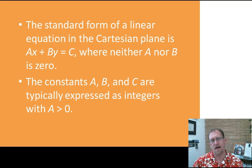So we are again reviewing Algebra 1 and letting it apply now to geometry. The standard form of a linear equation in the Cartesian plane is Ax + By = C, where neither A nor B is zero. If you have A or B as 0, then it throws things off. The constants A, B, and C are typically expressed as integers with A being greater than 0, so a positive integer. This is a system that we've learned before and we're going to be applying this now in geometry.